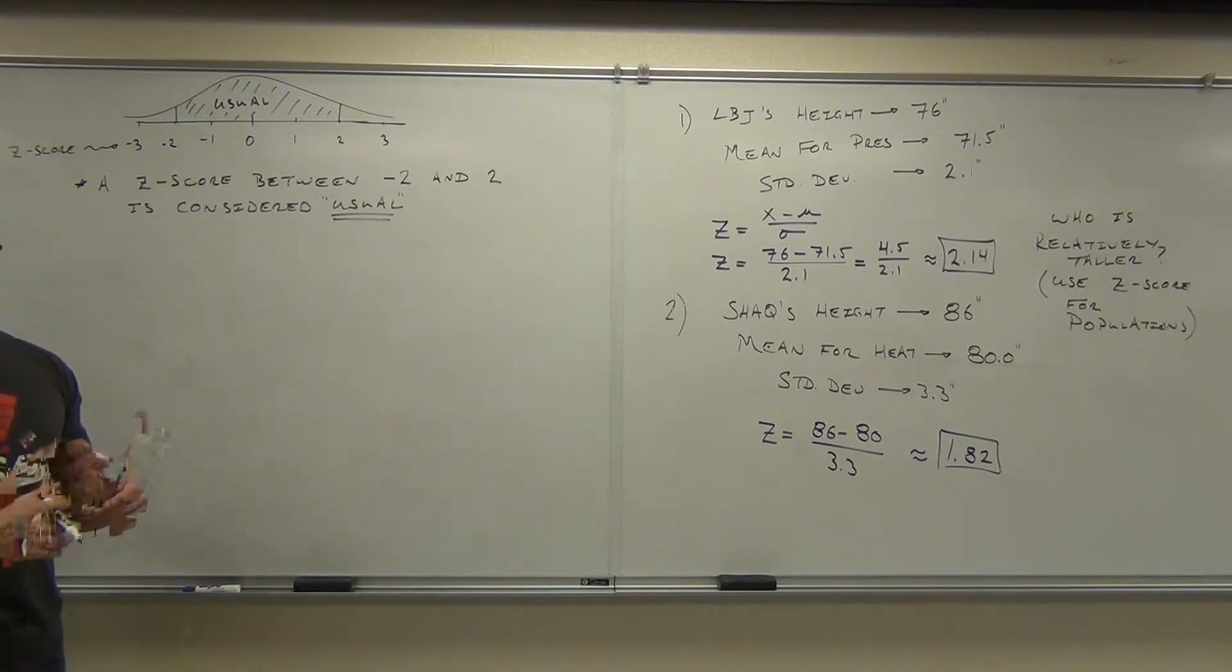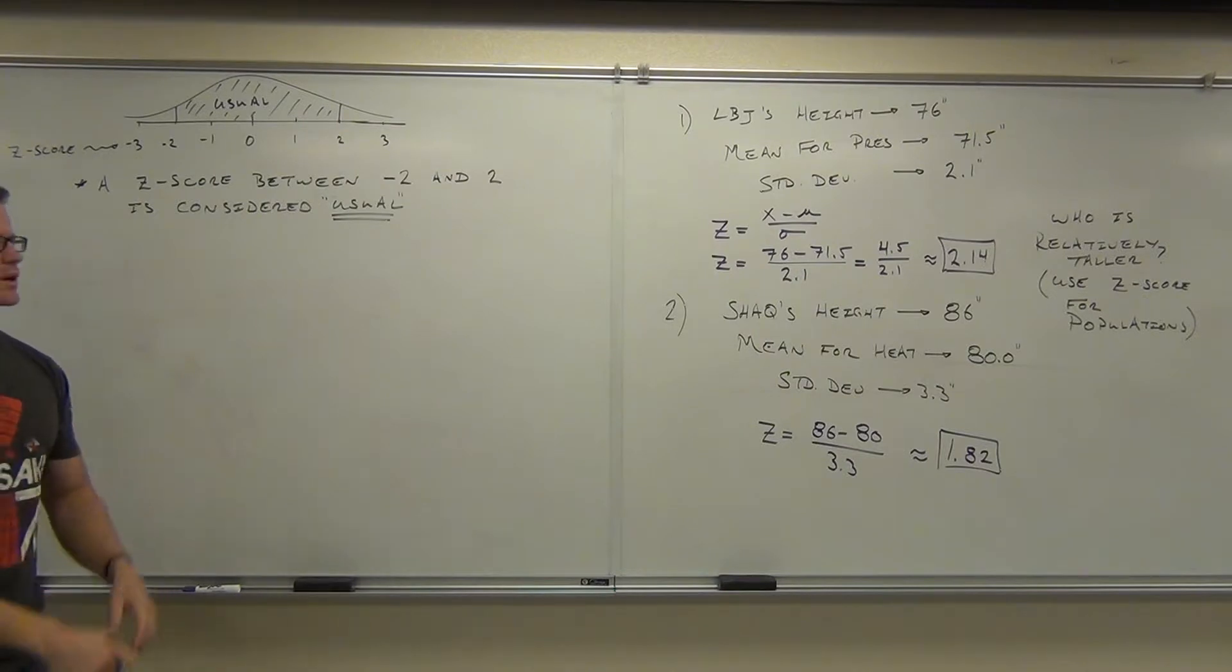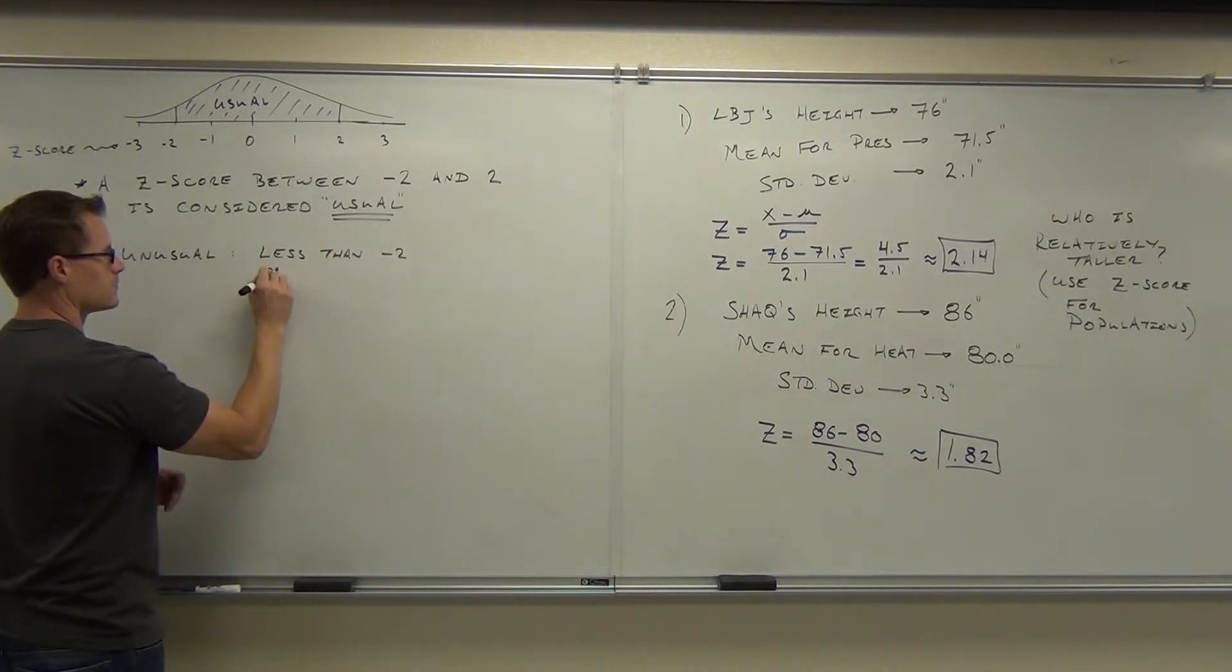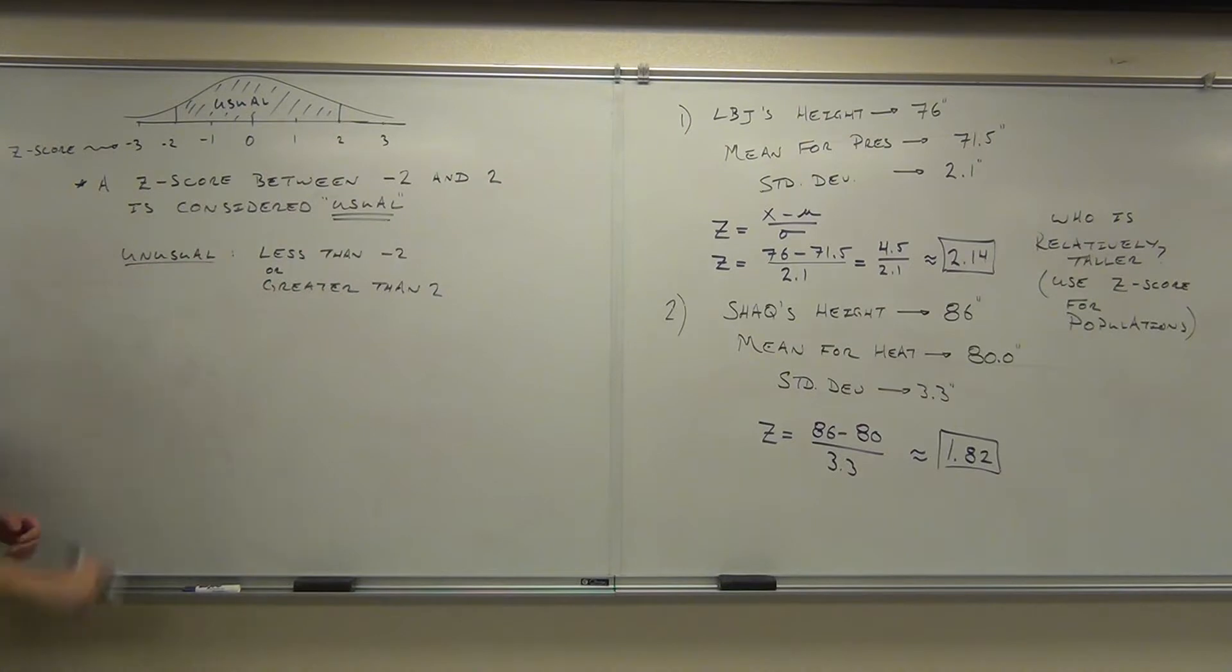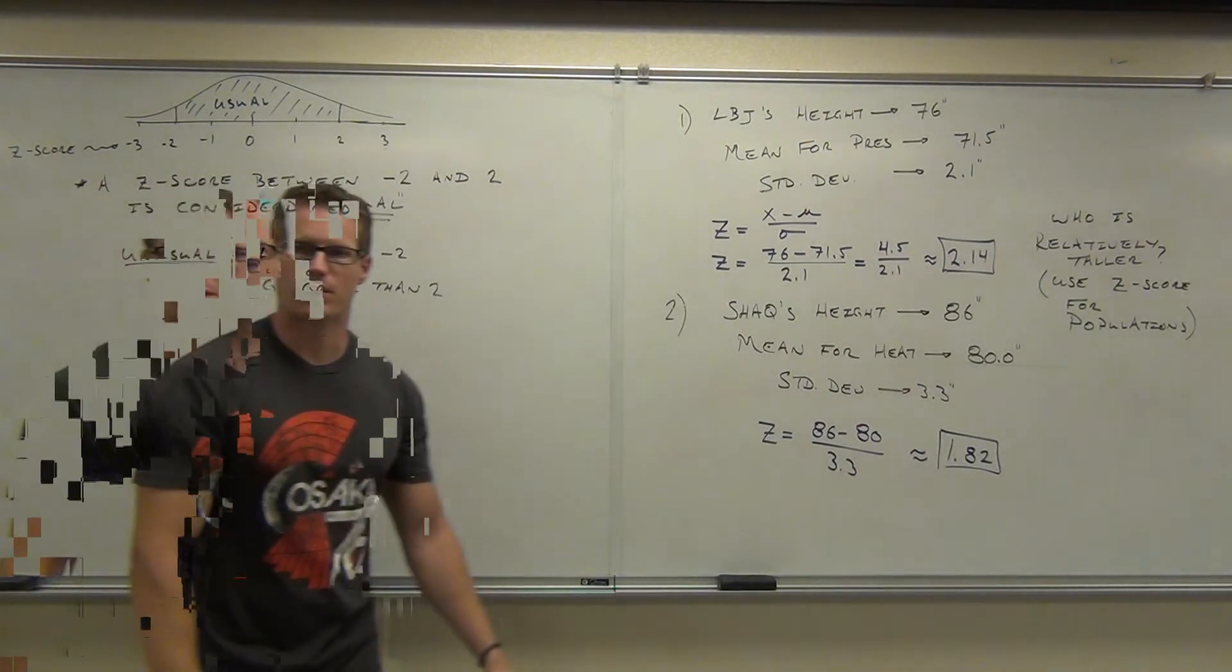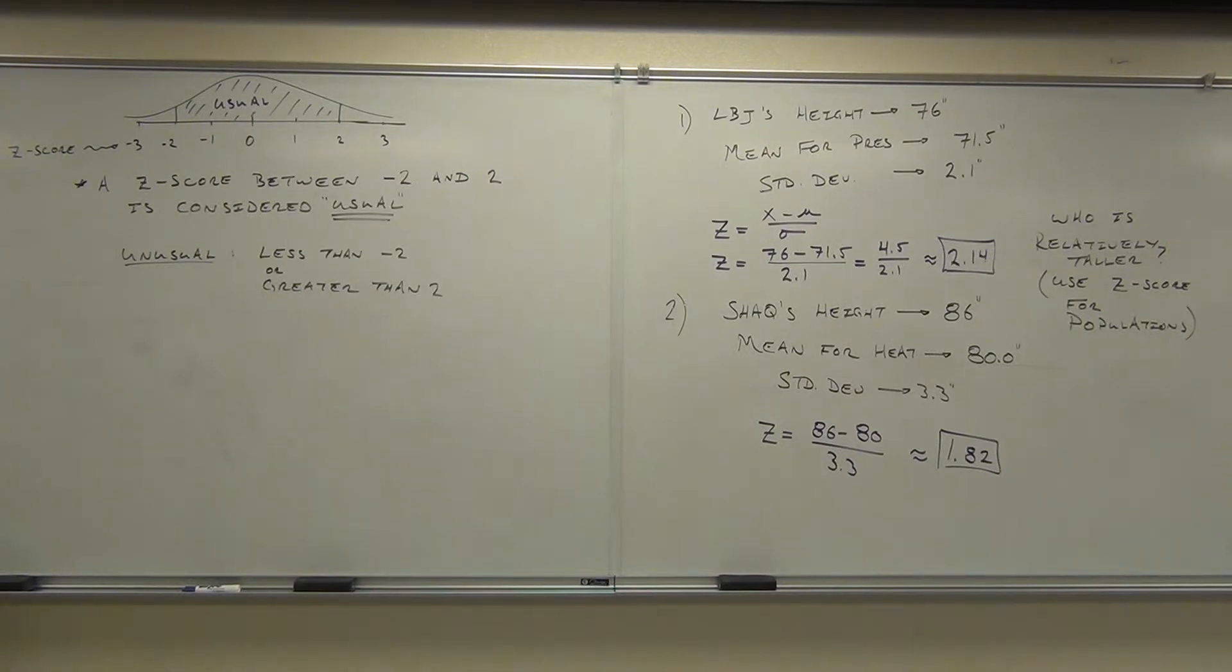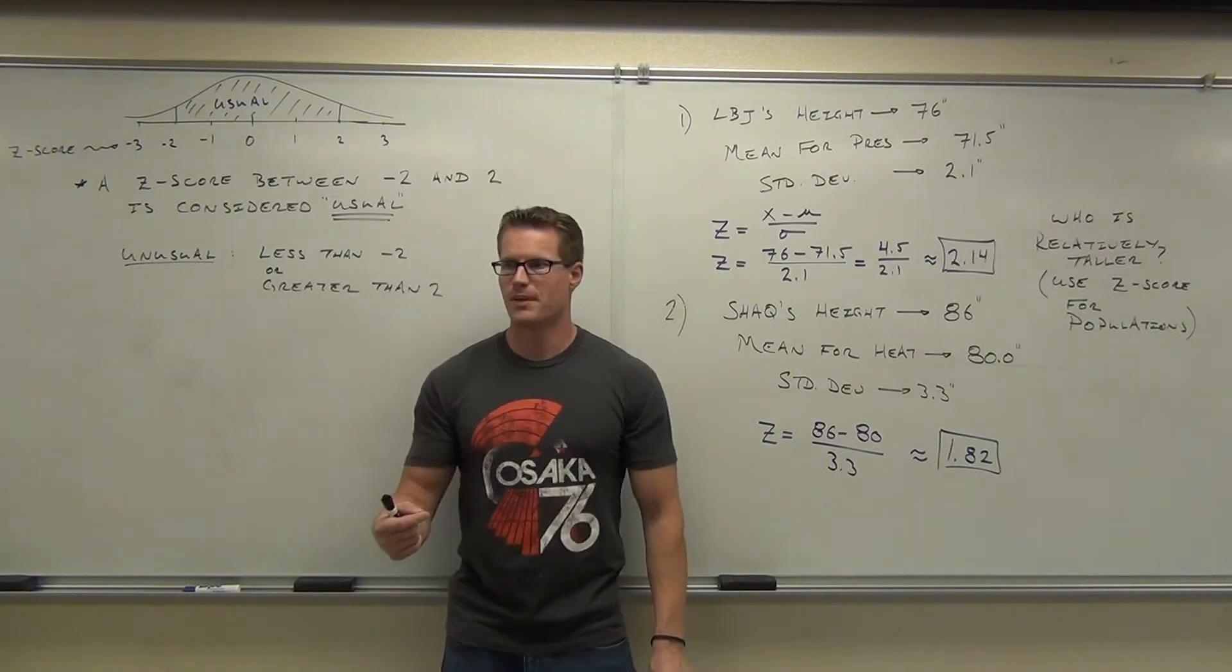So I'll write that out for you. A Z score between negative two and two is considered usual for right now. A Z score outside of the range of negative two and two is unusual. Unusual would be less than negative two or greater than two. That's outside that range of numbers right there. So since our Z score tells us how many standard deviations away from the mean we are, that's all it does, right?